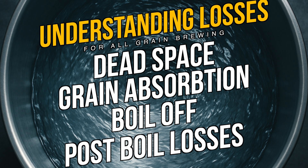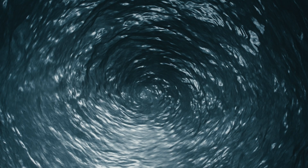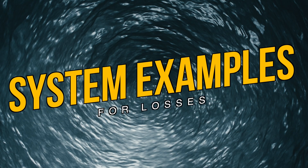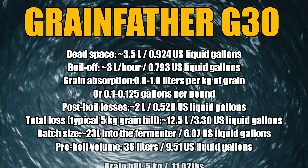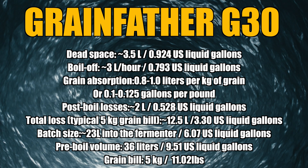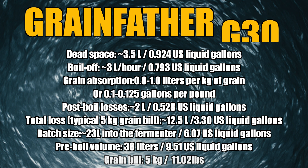In addition to these factors, you also have fluid stuck in your chiller or pump lines. Let's look at average losses for two popular brewing systems using European power supplies. First up is the Grainfather G30. This summary is based on a typical grain bill size and volume for this system. Dead space, boil off and post-boil losses shown are very typical for an all-in-one system of this size. Grain absorption of 0.8 to 1 litre per kilo of grain, or 0.1 to 0.125 gallons per pound, is an aspect that will not change from system to system — use this figure no matter what you are brewing with.